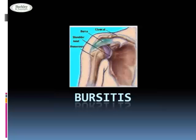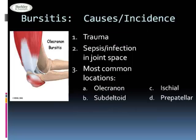Bursitis is inflammation of the bursa — that closed sac lined with a synovial-like membrane in an area subject to friction. Olecranon bursitis is a very common one, though it could be subdeltoid, ischial, or prepatellar.